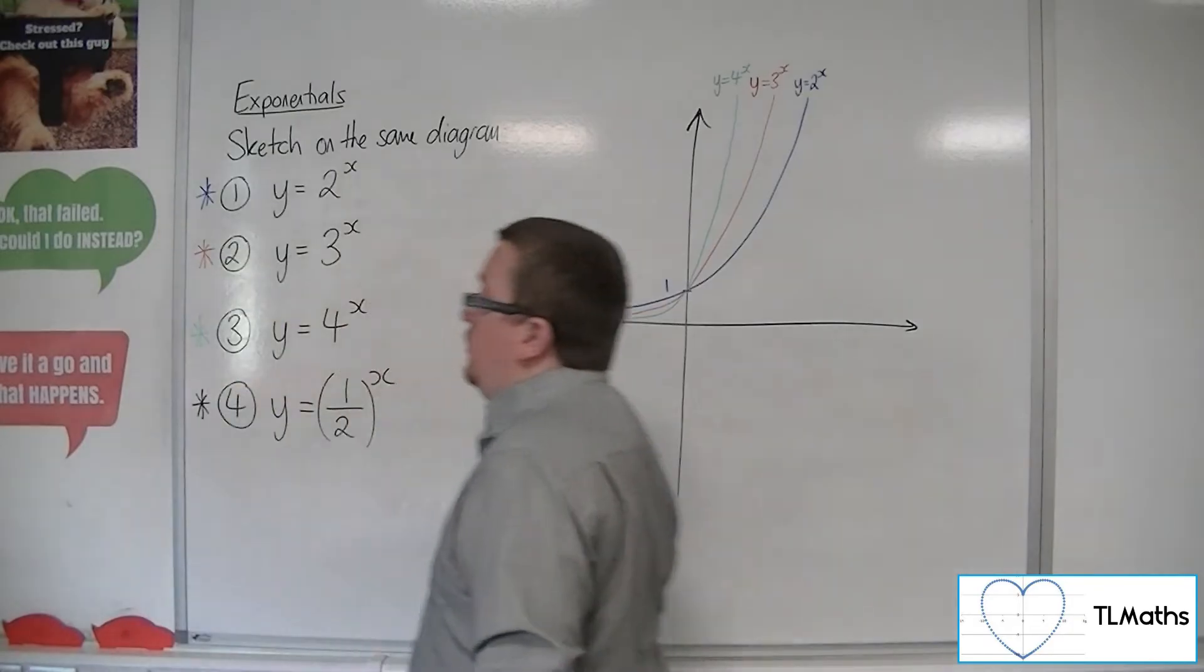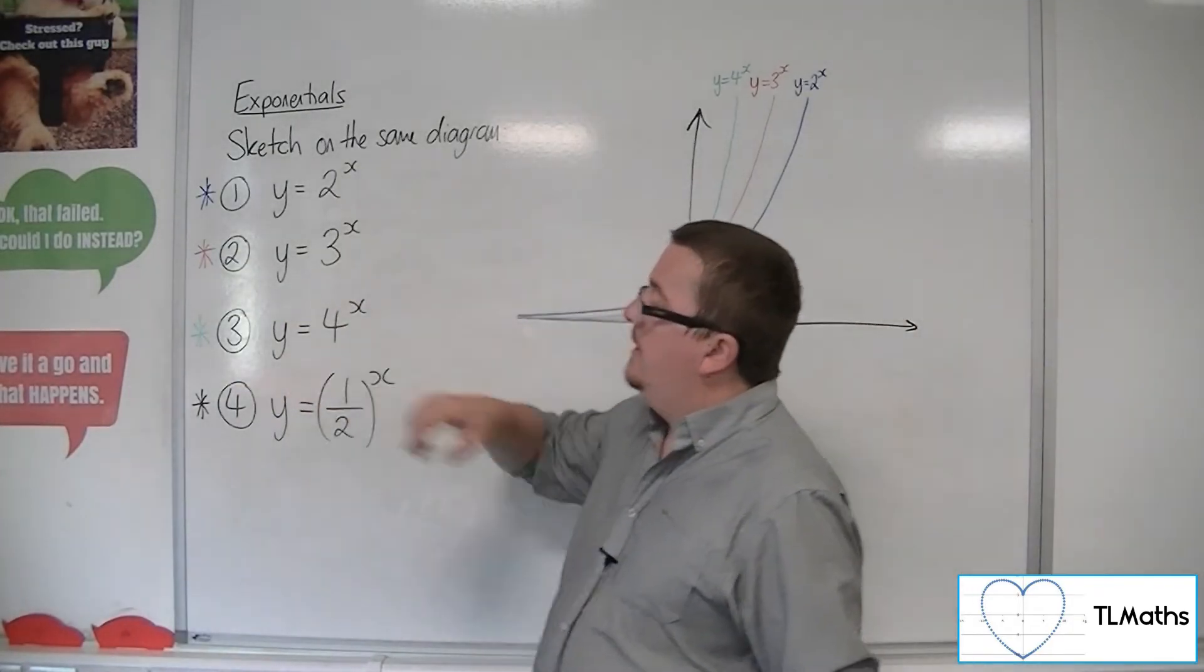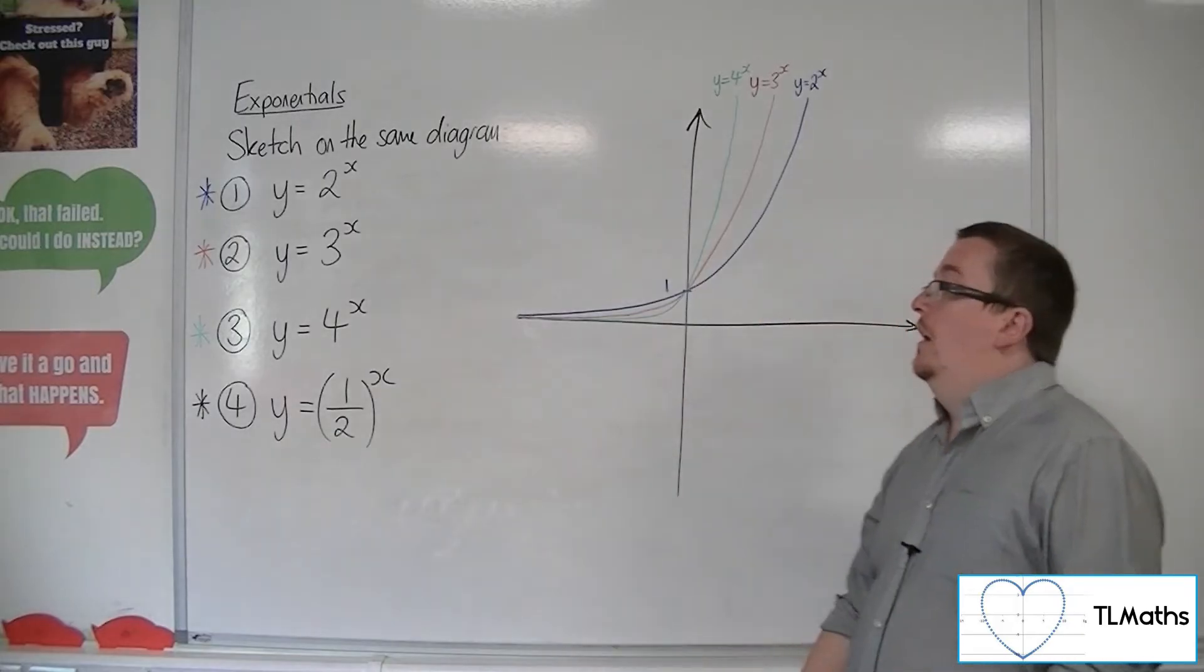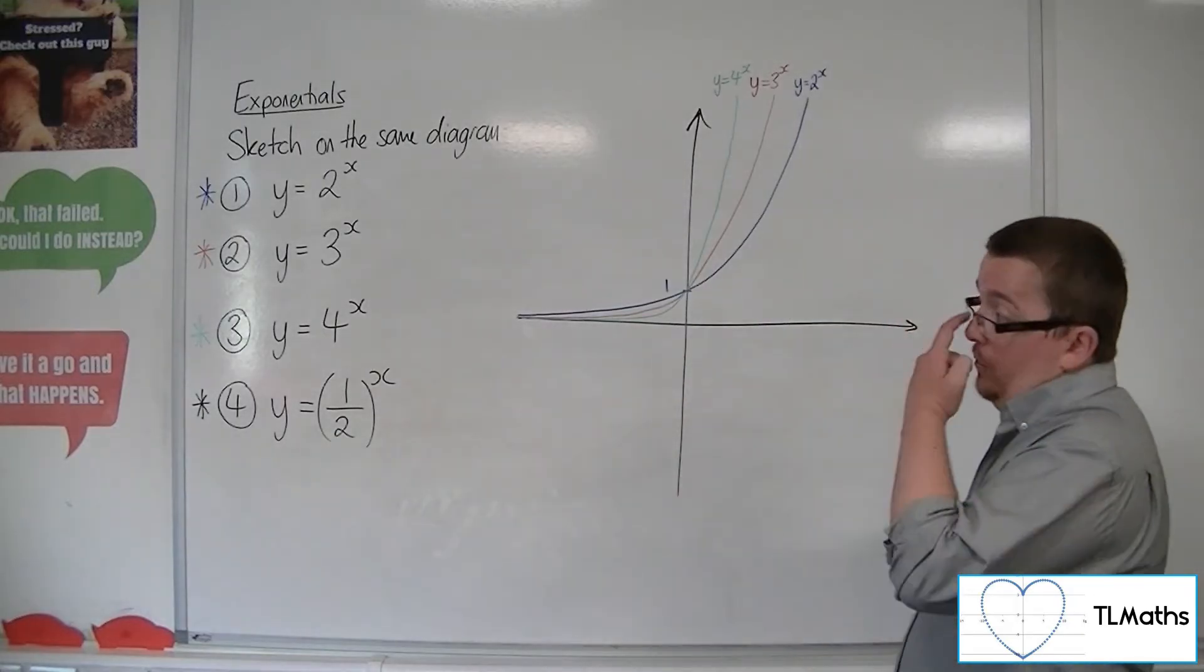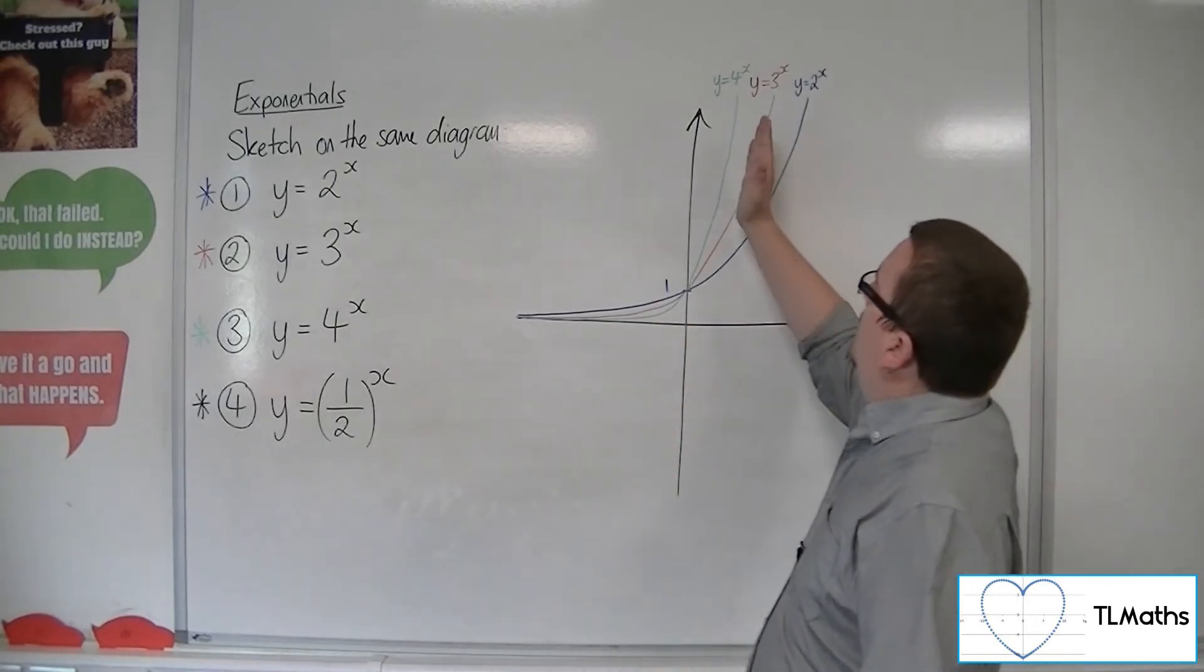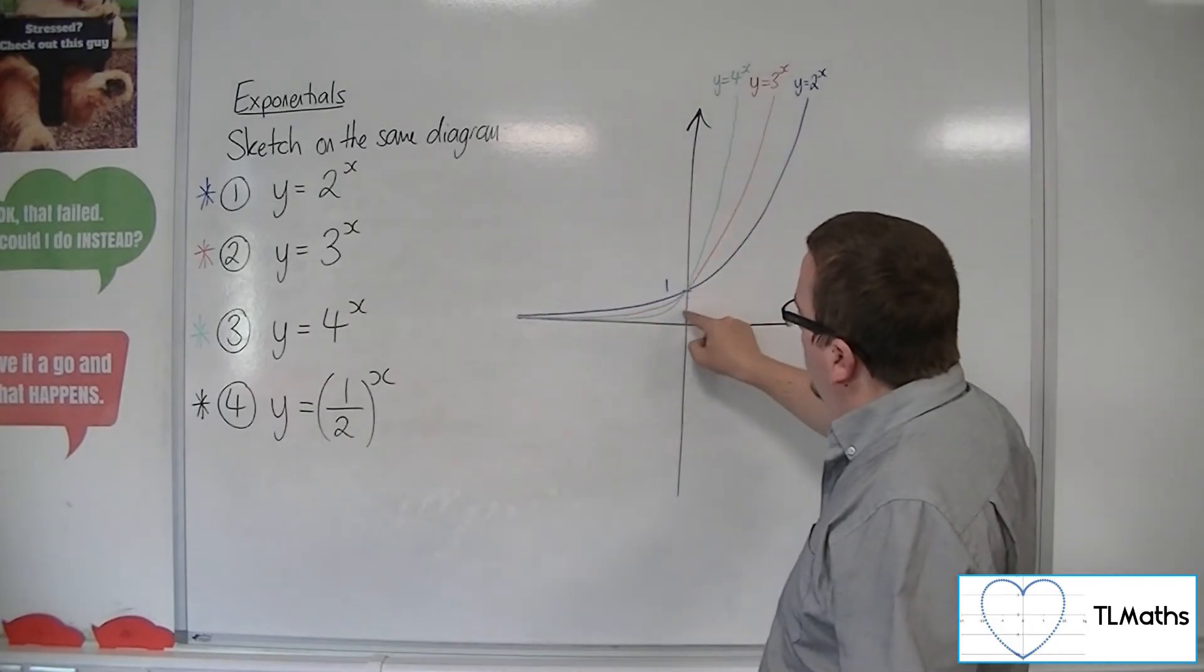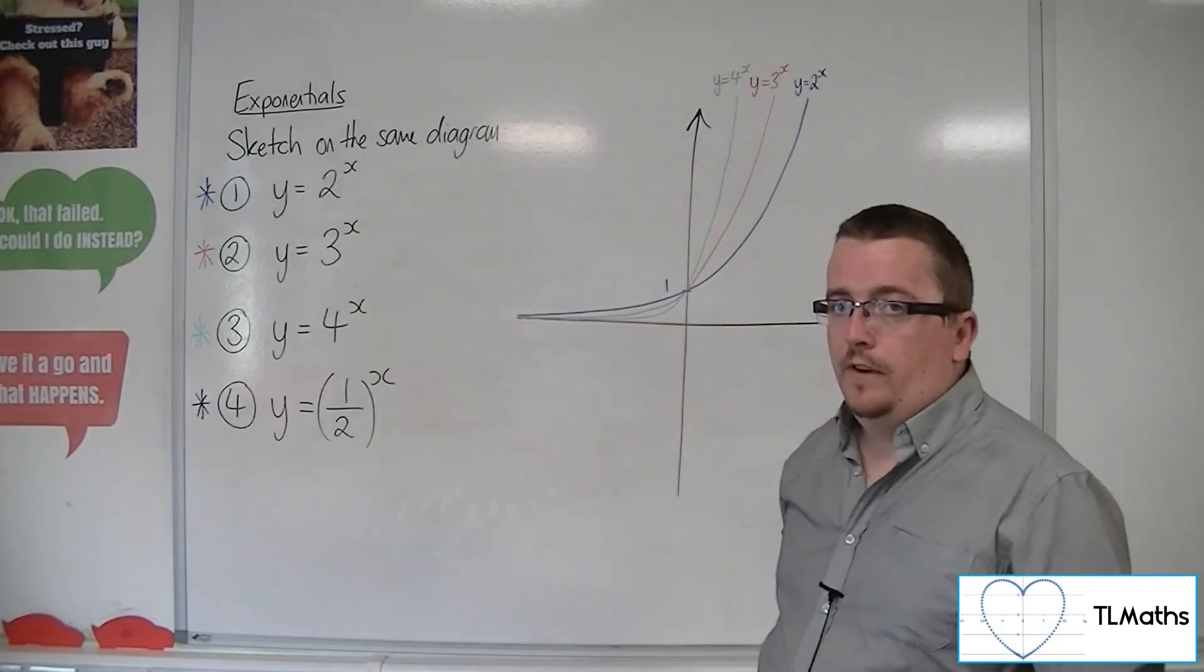So we've got these curves. And you can imagine that as I ramp up this number here, the a of a to the x, so we go to 5 to the x, 6 to the x, 10 to the x, these curves will be steeper and steeper and steeper, still going through 1 and decreasing a lot faster as well.